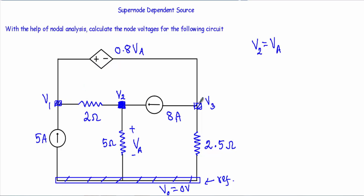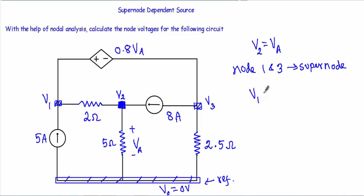Now look at nodes 1 and 3 — a voltage source is connected between node 1 and node 3, therefore node 1 and node 3 will form our super node. Taking the voltage difference across the two terminals of this voltage source: this is the positive terminal of the 0.8 VA source and this is the negative terminal. This terminal is at higher potential, so I can write V1 minus V3 equals 0.8 VA.